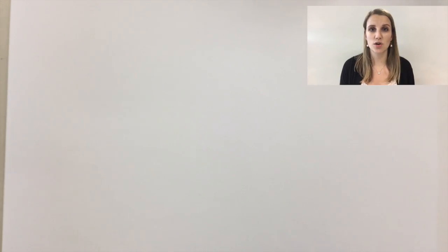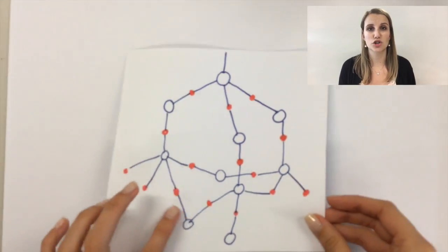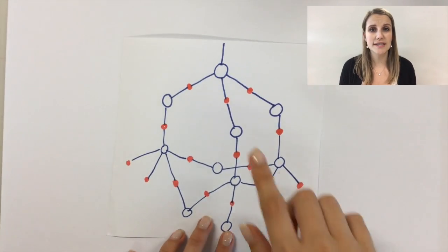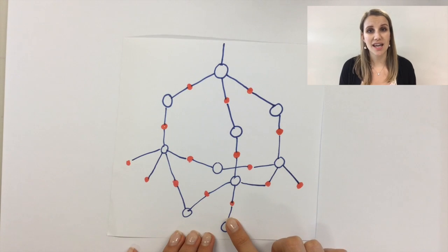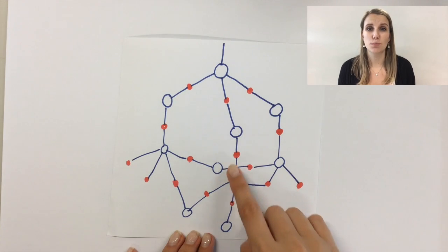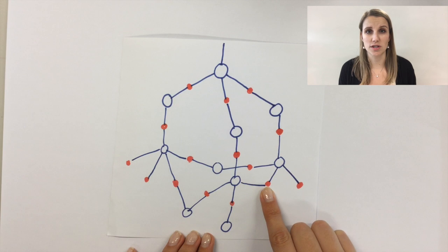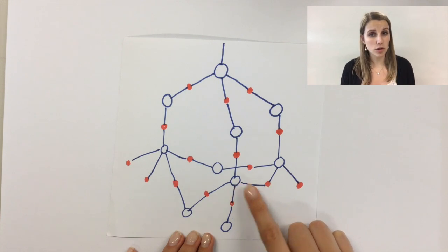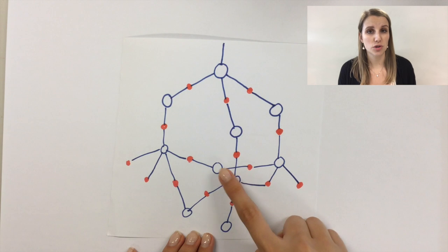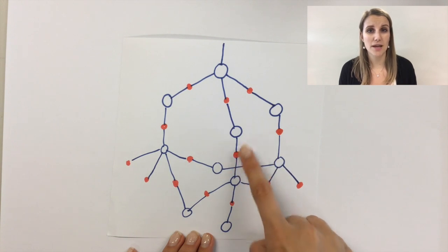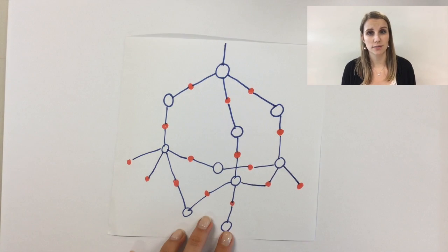This is silicon dioxide drawn in two dimensions. What you can see here is that each silicon — each of the blue atoms — is bonded to four oxygens, the red atoms in this model. Each of the oxygens is bonded to two silicons, and that makes the structure of silicon dioxide.